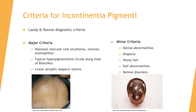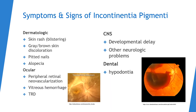The minor criteria includes dental abnormalities, alopecia, wooly hair, and nail abnormalities, as well as retinal disorders in the eye. Incontinentia pigmenti exerts its effects mainly on the nervous system, ocular, dermatologic, and dental systems, categorizing the symptoms and signs into these four categories.